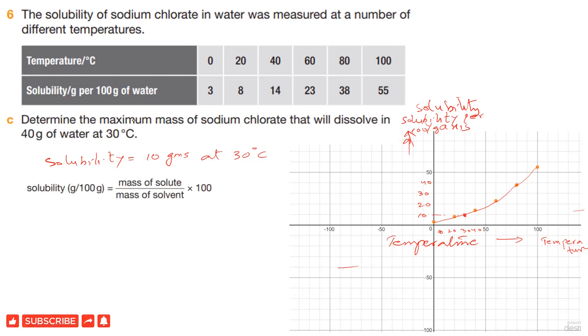As we know, the formula for solubility equals mass of solute over mass of solvent times 100. Solubility is 10 equals X (the unknown mass of solute) over 40 grams of water times 100. We rearrange: 10 times 40 divided by 100 equals X. When we simplify, we get 4 grams. This means 4 grams of sodium chloride will dissolve in 40 grams of water at 30 degrees Celsius. This is the maximum amount.